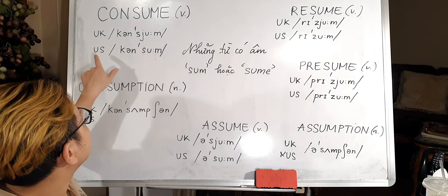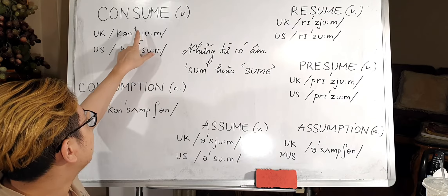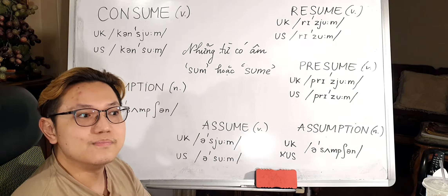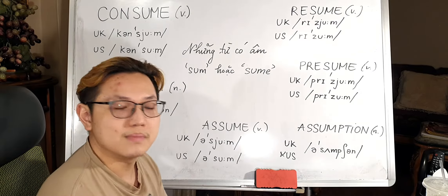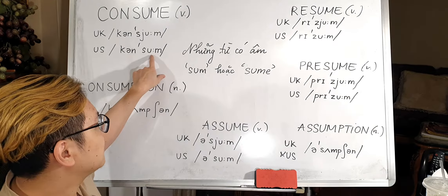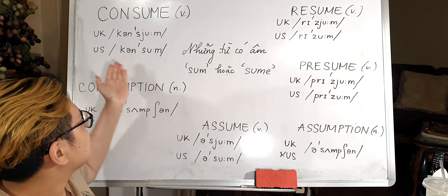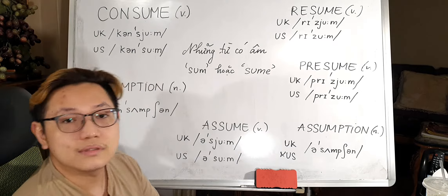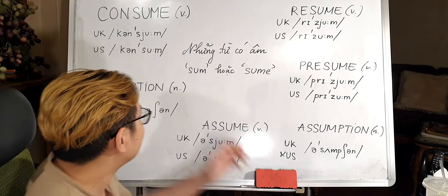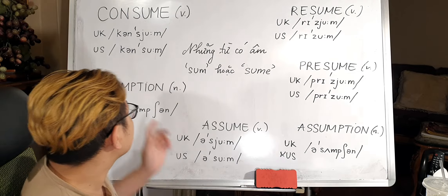But in US, they basically eliminate the J, so it becomes 'consume'. Still a long vowel though. Giọng Mỹ thì ta sẽ biến thành là 'consume', nhưng mà Ô vẫn kéo dài — nó bỏ một cái J thôi.